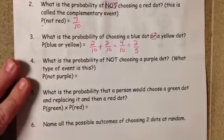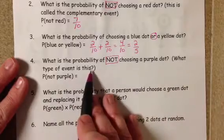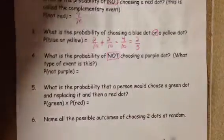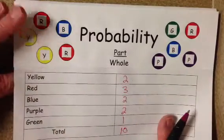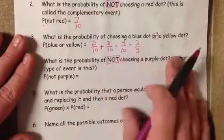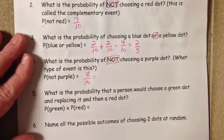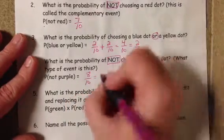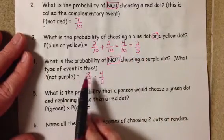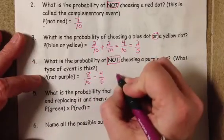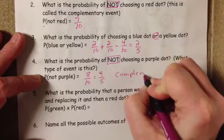We want to know: what is the probability of not choosing a purple dot, and what type of event is this? There are two purple dots out of ten, so the not-purple ones are everything else — eight dots — giving us eight out of ten. This simplifies by dividing by two to give four-fifths. This would be the complementary event, because it is the 'not' part of getting the purple dots.